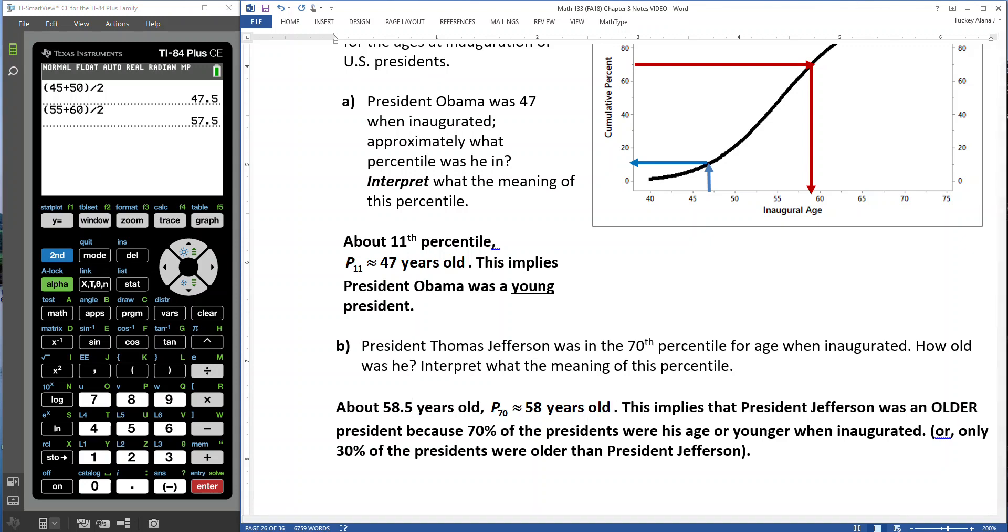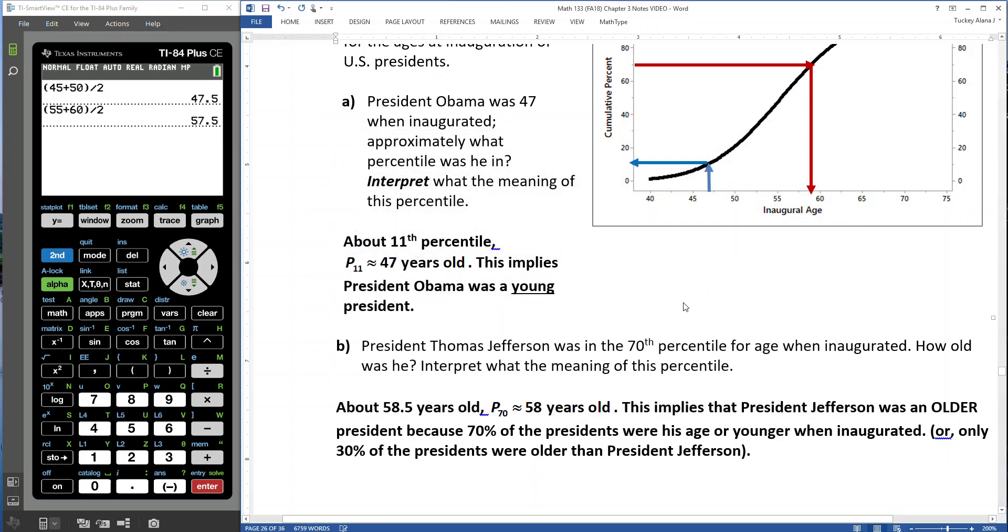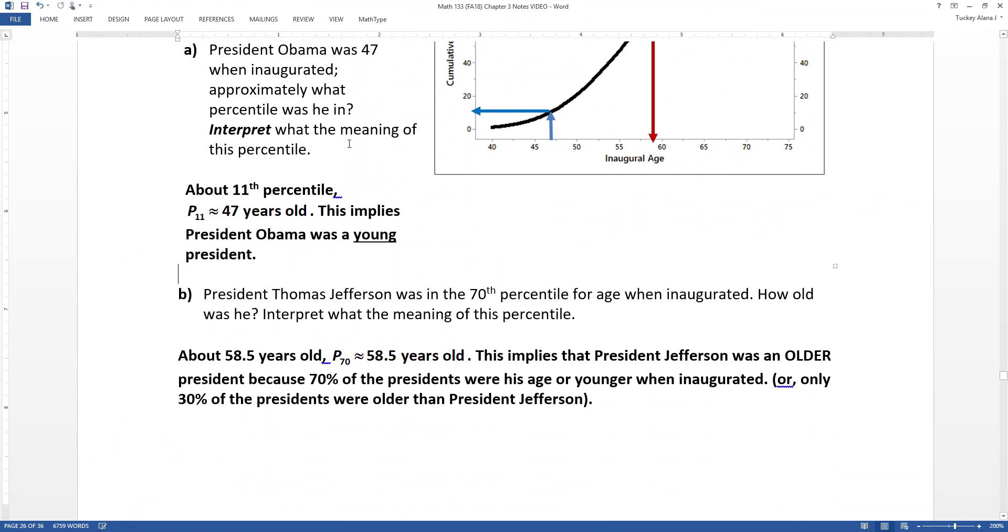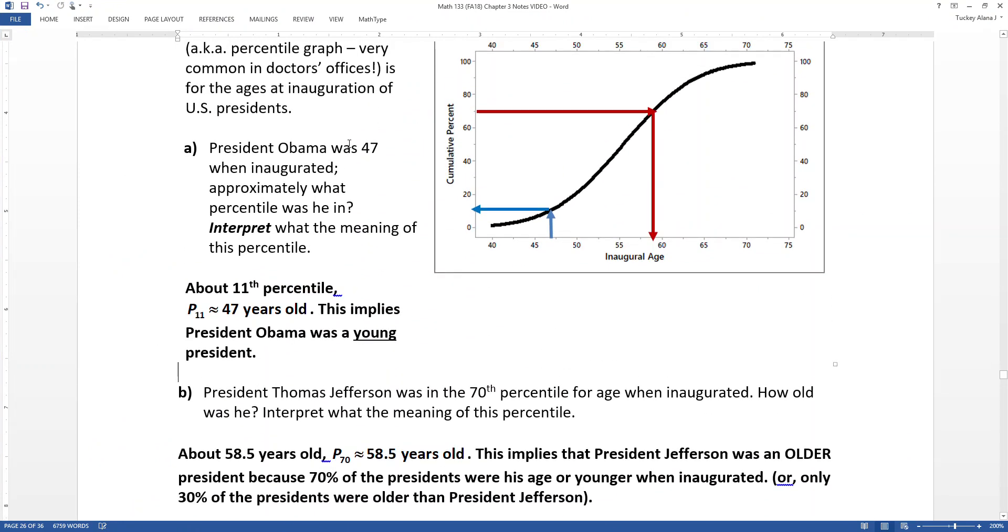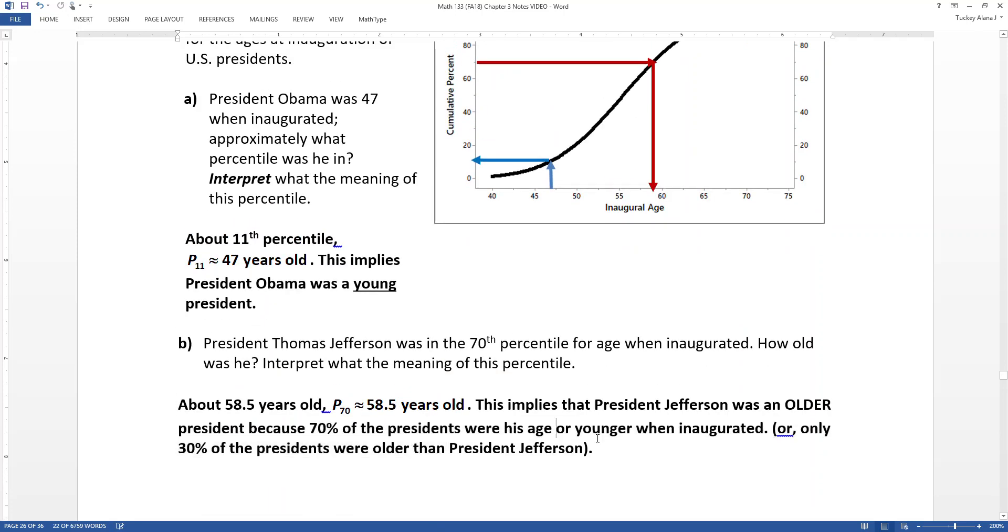You know, looking at this a little bit more, I think it's more like 58 and a half. It's a little too far away from that line to be 58. So I'm going to go 58 and a half. And there we go. So that implies that he was an older president, right. So he was in the 70th percentile. 70% of presidents were his age or younger, which means only 30% of the presidents were older than him. Which is not very many. So he was an older president.